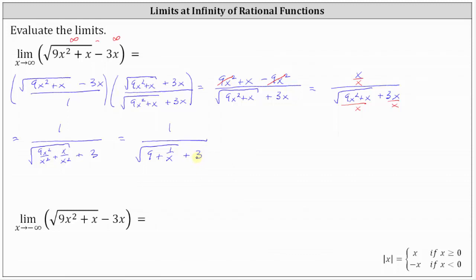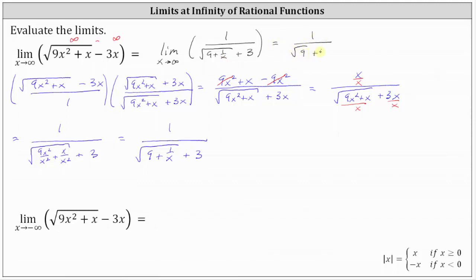Now we can find the limit in this form. The given limit is equal to the limit of one divided by the sum of the square root of the quantity nine plus one divided by X, and three. As X approaches infinity, the only thing affected by X is one divided by X, which approaches zero, giving us one divided by the sum of the square root of nine and three. The square root of nine is three, giving us one divided by the sum of three and three, which equals one sixth. The limit is equal to one sixth.